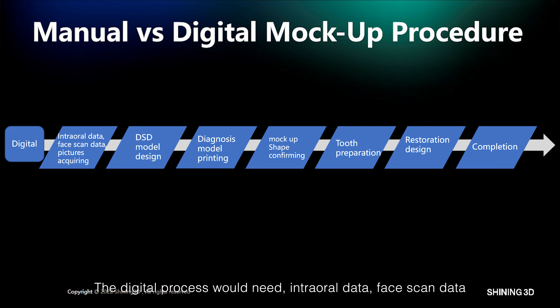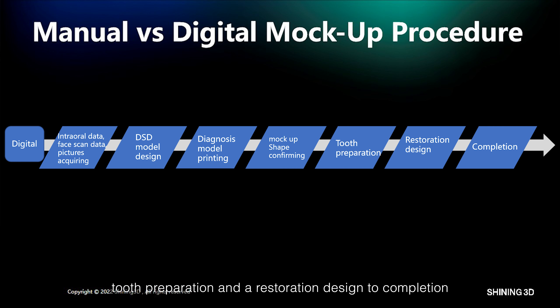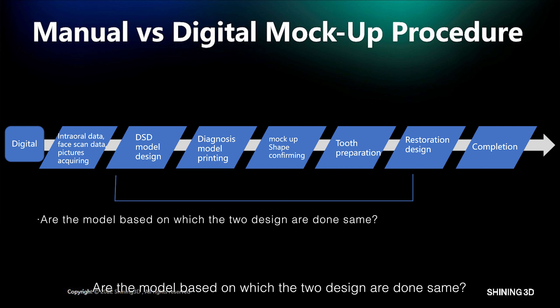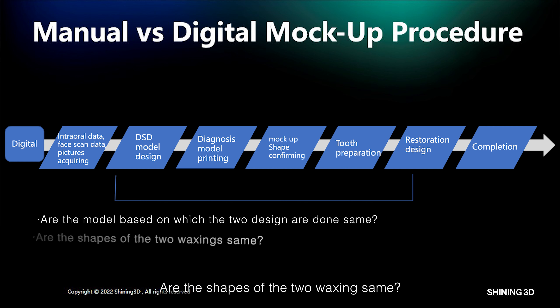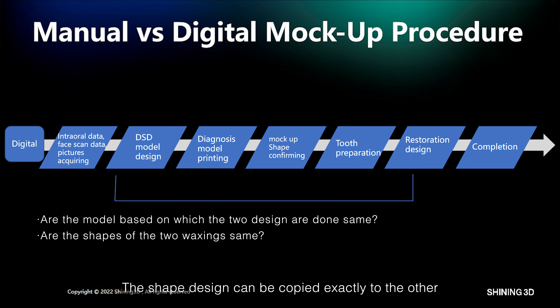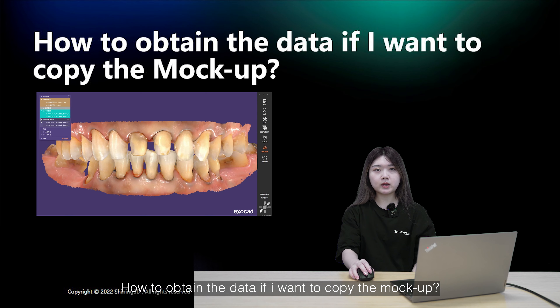The digital process would need intraoral data, face scan data, and picture acquisition. Then would follow diagnosis, model design, and model printing. Digital mock-up for shape confirming, tooth preparation, and restoration design to completion. Are the models based on which the two designs are done the same? No — the first one is pre-operation intraoral data, and the second one is prepared tooth data. Are the shapes of the two designs the same? The shape design can be copied exactly the same. How to obtain the data if you want to copy the mock-up?